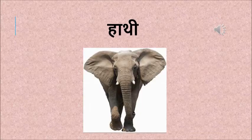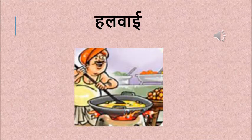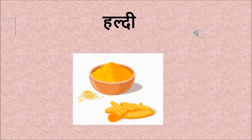So now a few words with the varna Ha. The first word is haati. Haati means elephant. And the next word is hateli. Hateli means hand. And then the next word is halwai. Halwai is a person who makes sweets. Then hal — hal means a plow. Haldi means turmeric. So we have learnt a few words: haati, hateli, halwai, hal, and haldi.